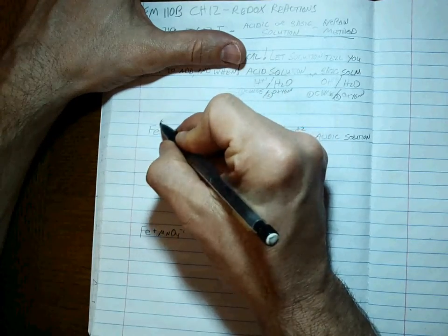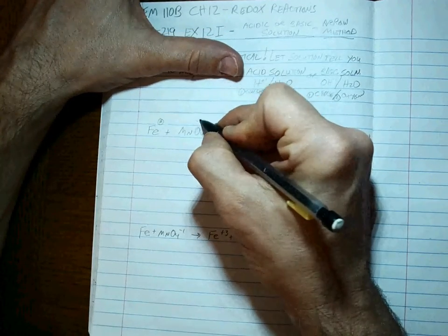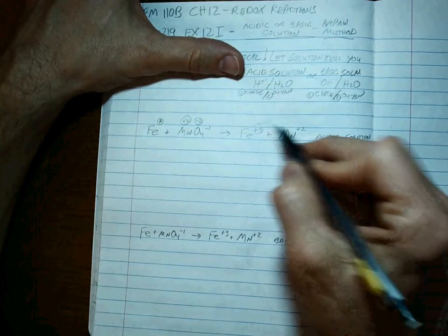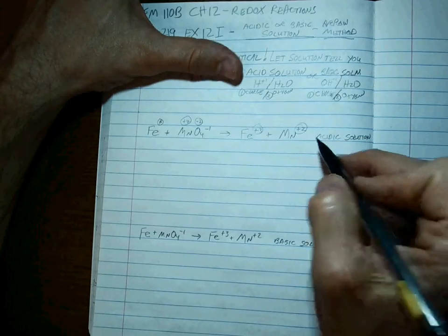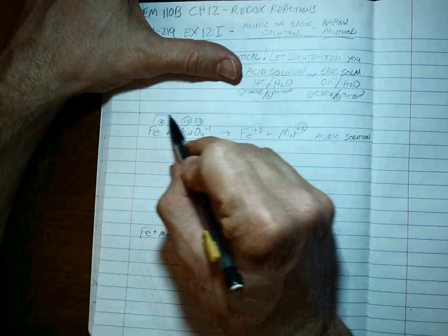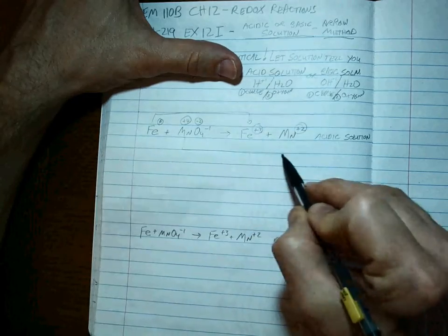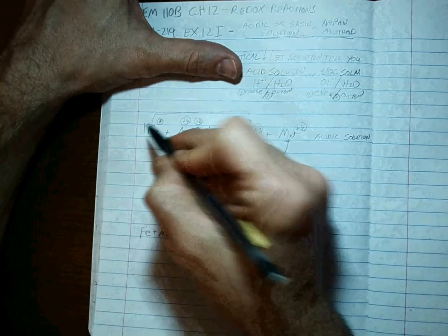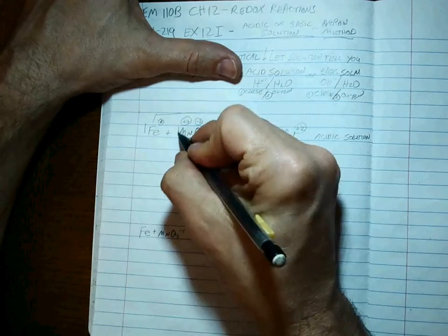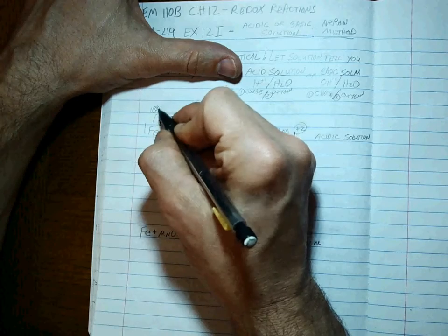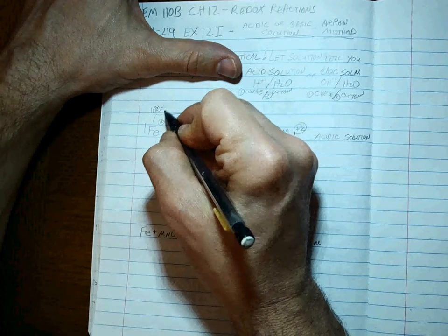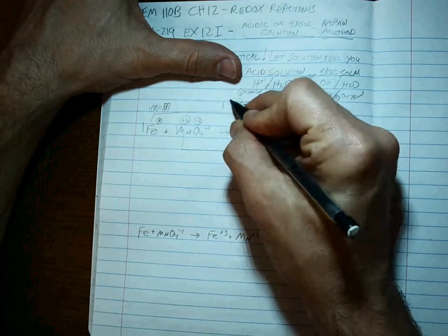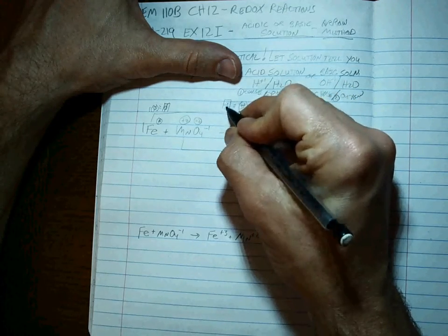Step number one, oxidation numbers. Let's go. Minus two, total of minus eight, so that's a plus seven. That's a plus three and a plus two. Good. Arrows between things that are changing. Fe to Fe, Mn to Mn. Good. Balance the atoms with arrows attached. Simple one-to-one ratio here. So one times zero gives us zero to start with.